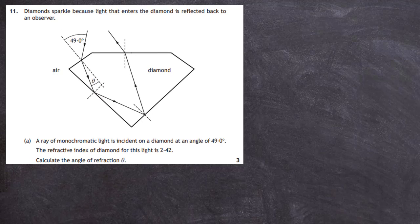Question 11 from Section 2 of the 2019 Higher Physics SQA exam. Diamonds sparkle because light that enters the diamond is reflected back to an observer. We can see in the diagram rays of light coming in from air into the diamond, being refracted and reflected.